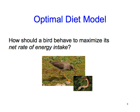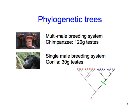We also look at the use of phylogenetic trees to test hypotheses about the evolution of behaviour. For example, a male chimpanzee has testes weighing 120 grams, whereas the gorilla is a much larger animal, yet its testes weigh only a measly 30 grams. How can we use a phylogeny to discover why there's that difference?